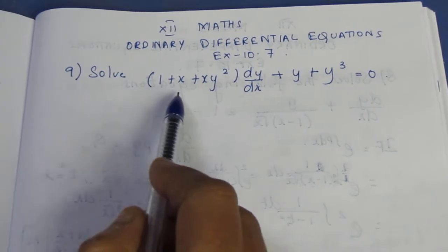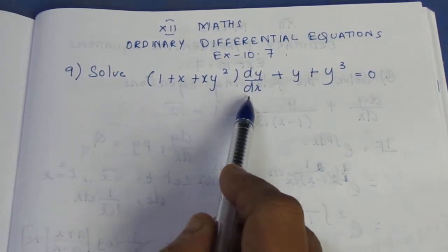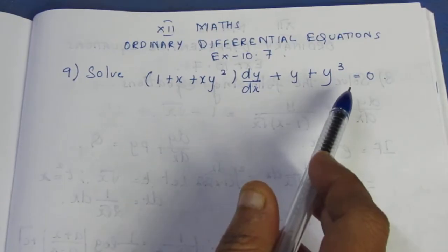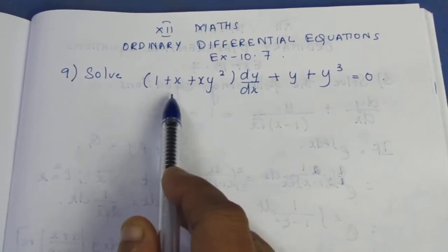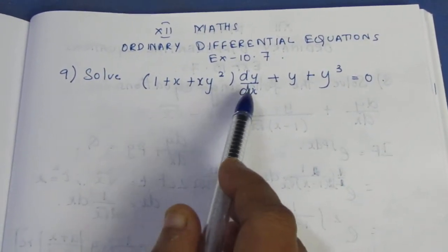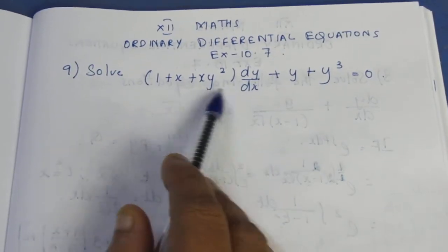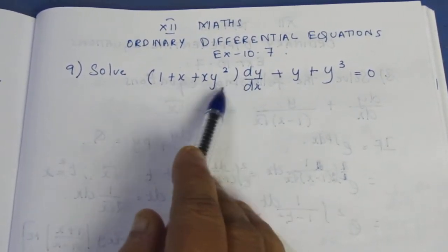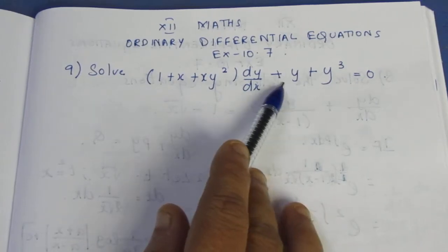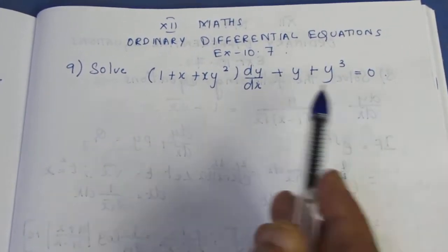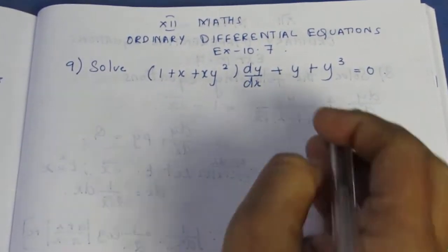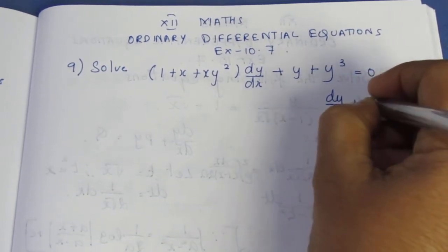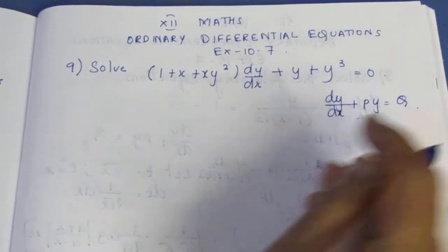Solve: (1 + x + xy²) dy/dx + y + y³ = 0. We can use 2 terms. This is Exercise 10.7. So, dy/dx + Py = Q in the format.